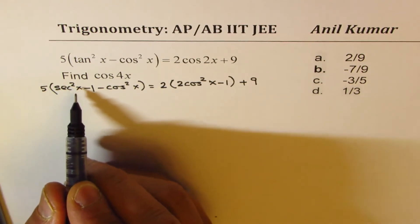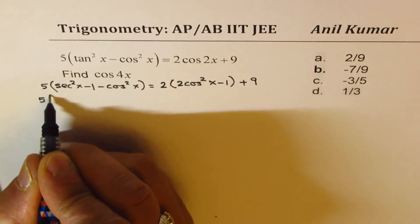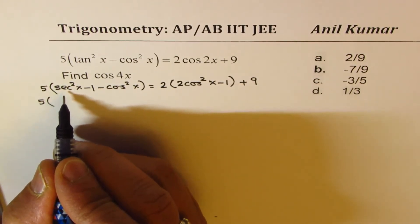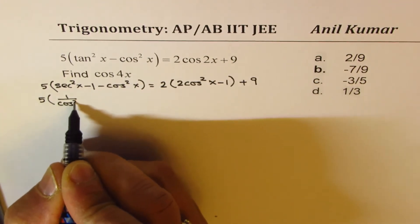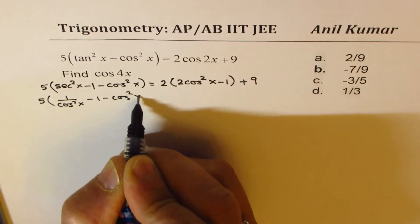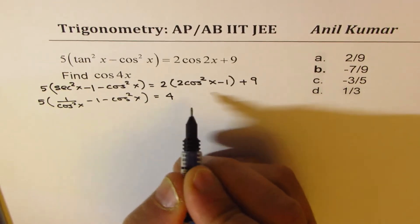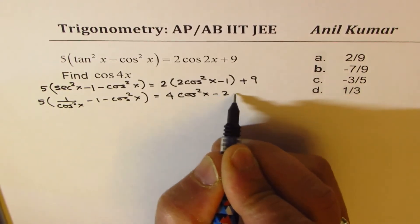Minus 1 plus 9. Now, let's expand and simplify. Secant square x can be written as 1 over cos square x. So we'll write this as 1 over cos square x minus 1 minus cos square x equals to, let's open this, we have 4 cos square x minus 2 plus 9.